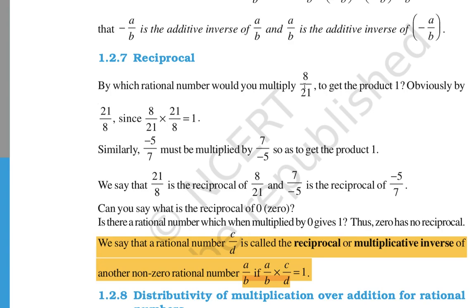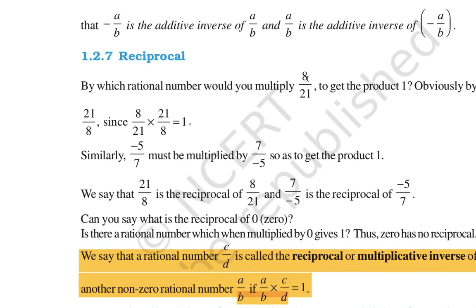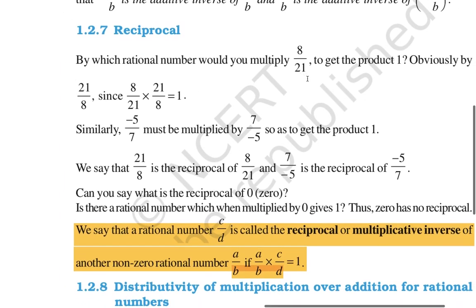For example: 5 plus minus 5 is 0, and 7 plus minus 7 is also 0. So when you add a number and its additive inverse, the result is always 0. That is the meaning of additive inverse.